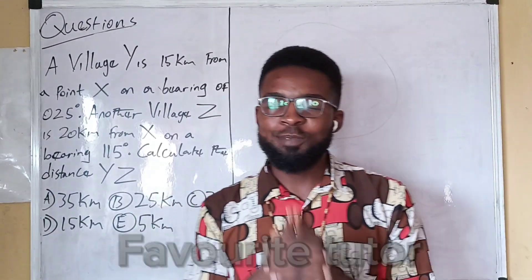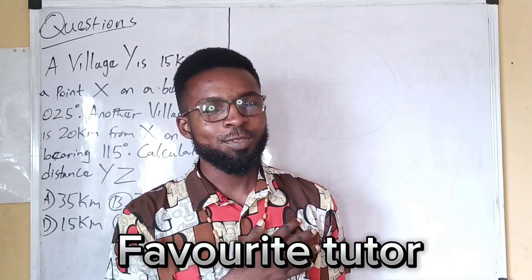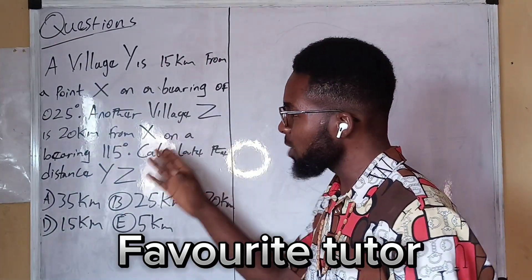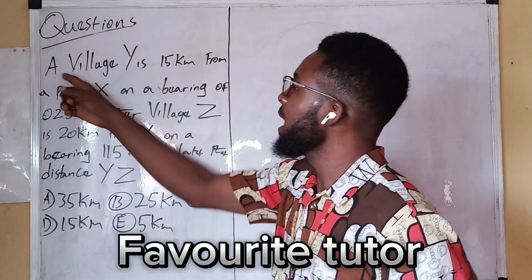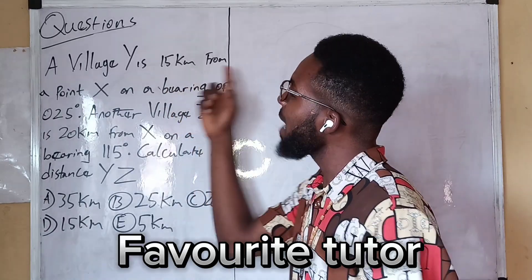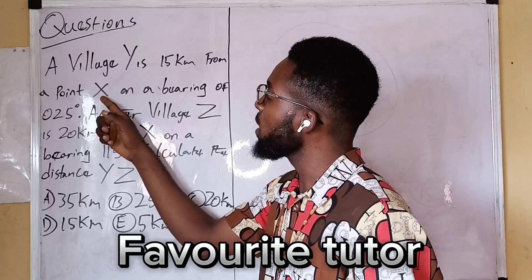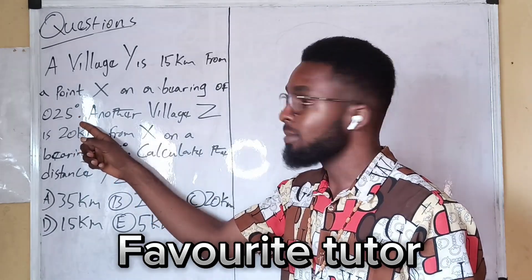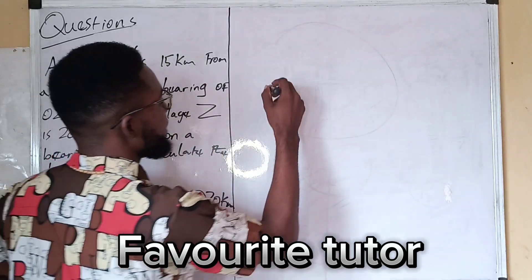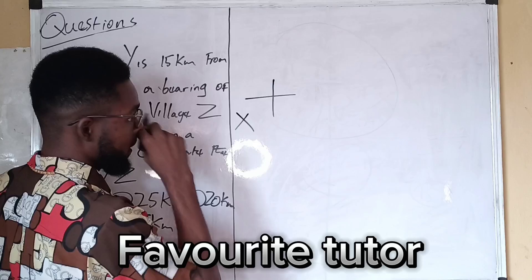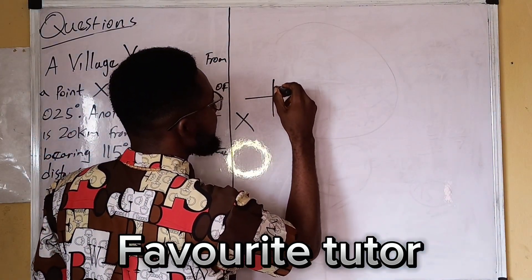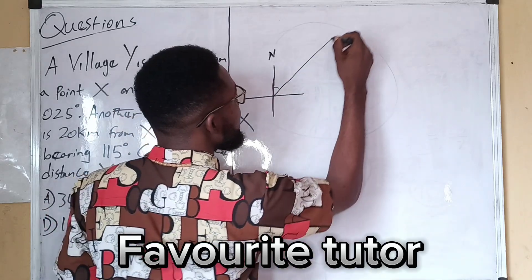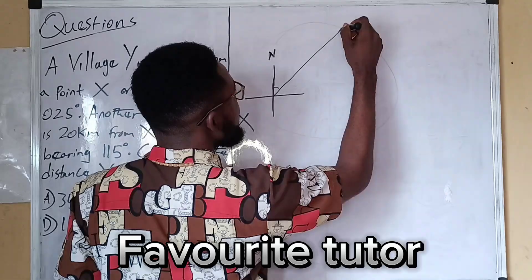Welcome back to another episode. I'm going to use this question to clarify something. This is a question on bearing. A village Y is 15 kilometers from a point X on a bearing of 025 degrees.